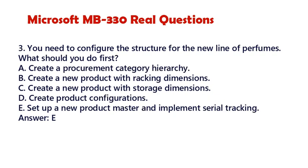Question 3. You need to configure the structure for the new line of perfumes. What should you do first? A. Create a procurement category hierarchy. B. Create a new product with tracking dimensions. C. Create a new product with storage dimensions. D. Create product configurations. E. Set up a new product master and implement serial tracking. Answer: E.